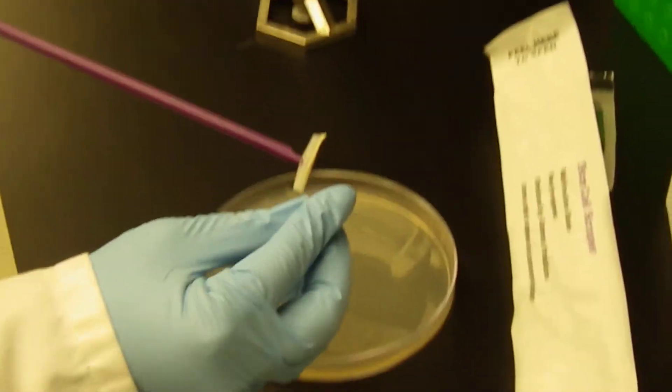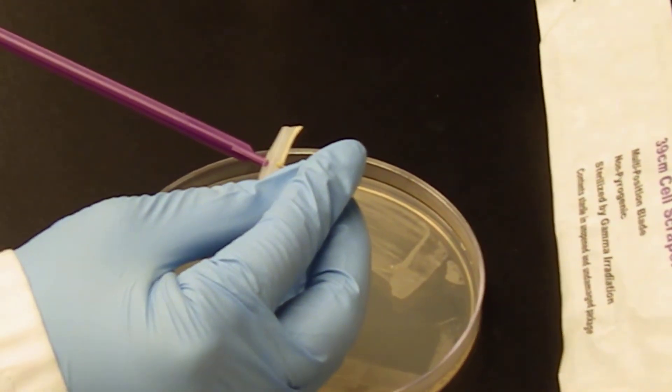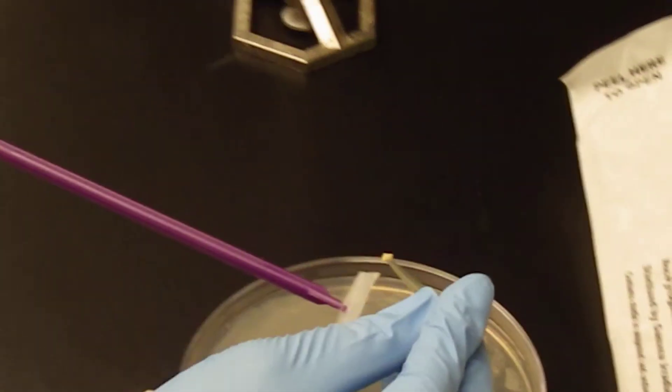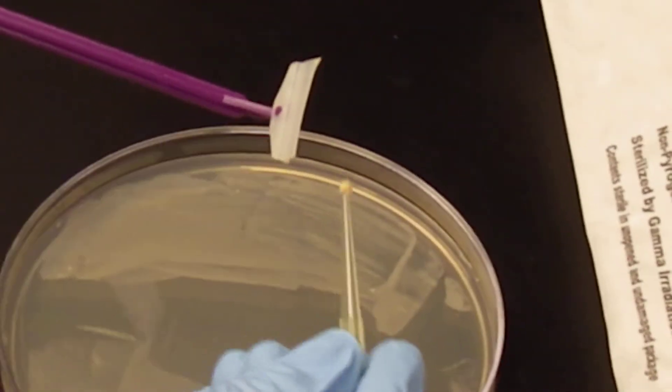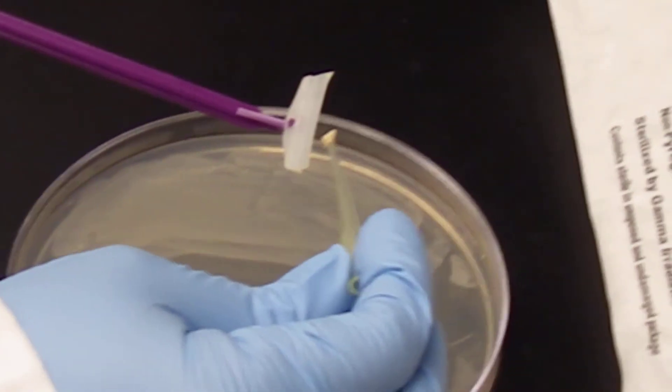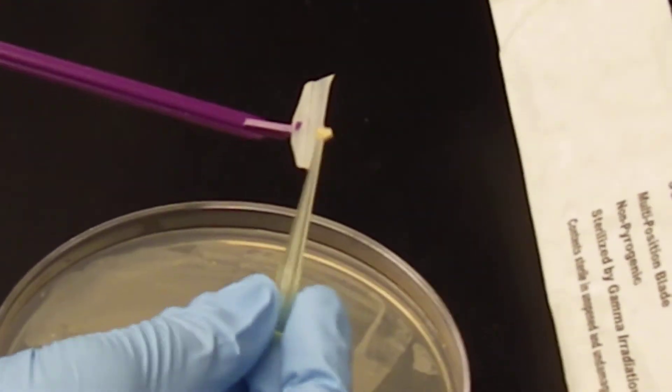and scrape the bacteria off the edge of the cell scraper, then take that and put it into a 15mm conical tube.